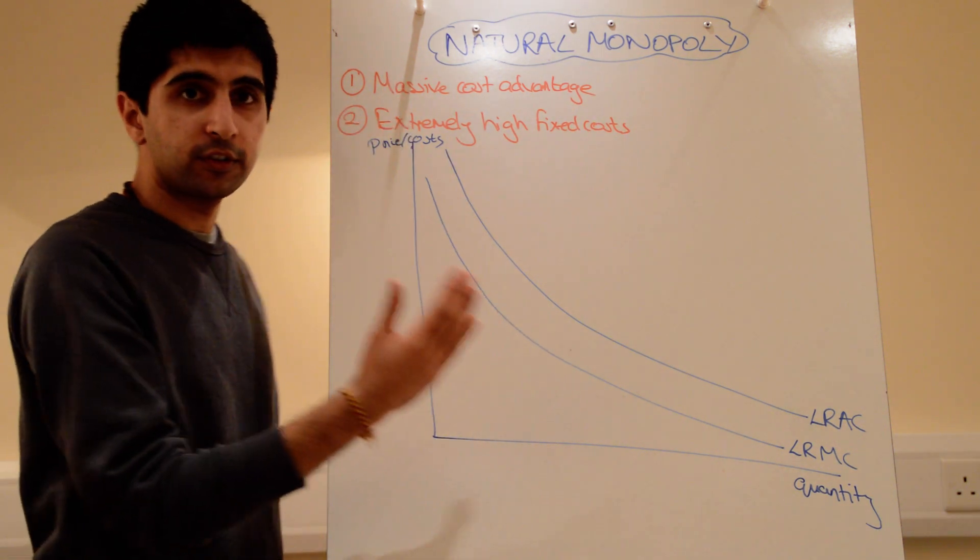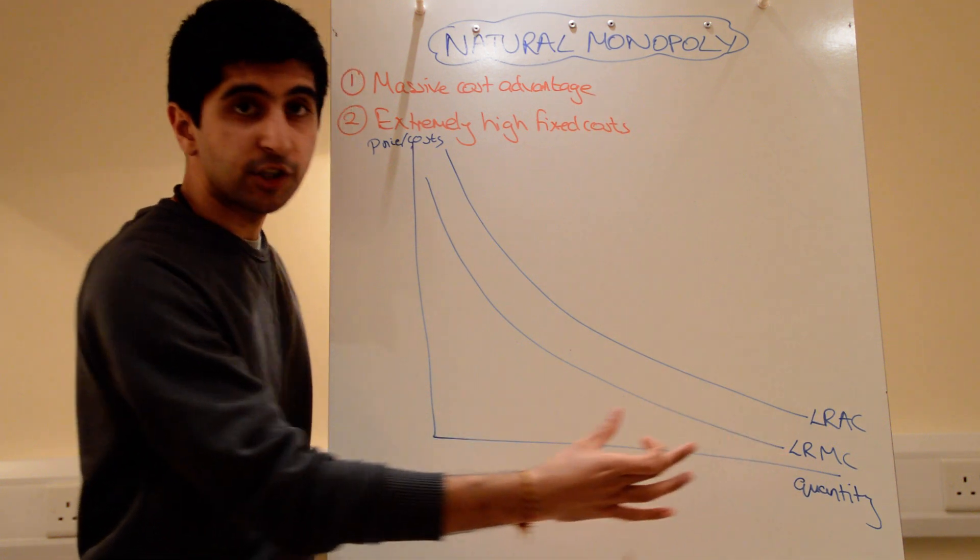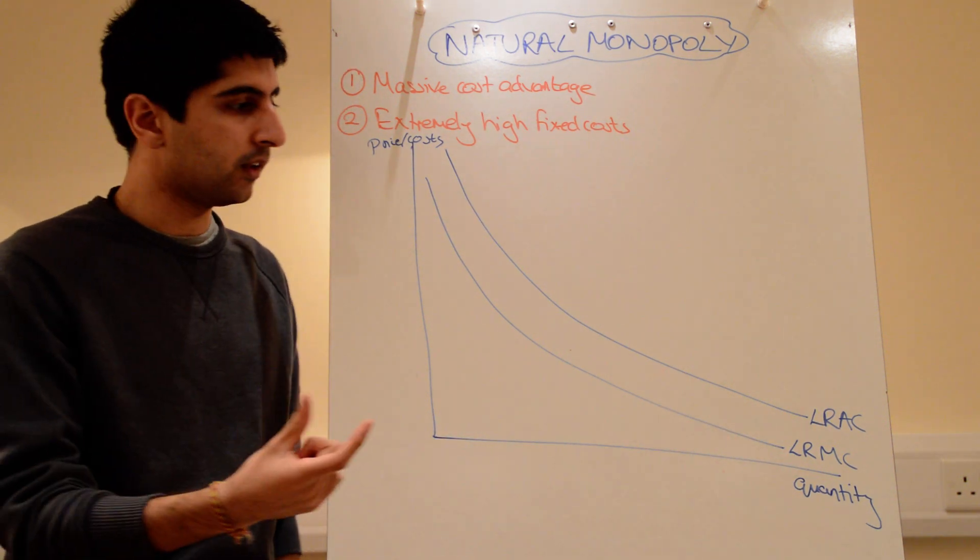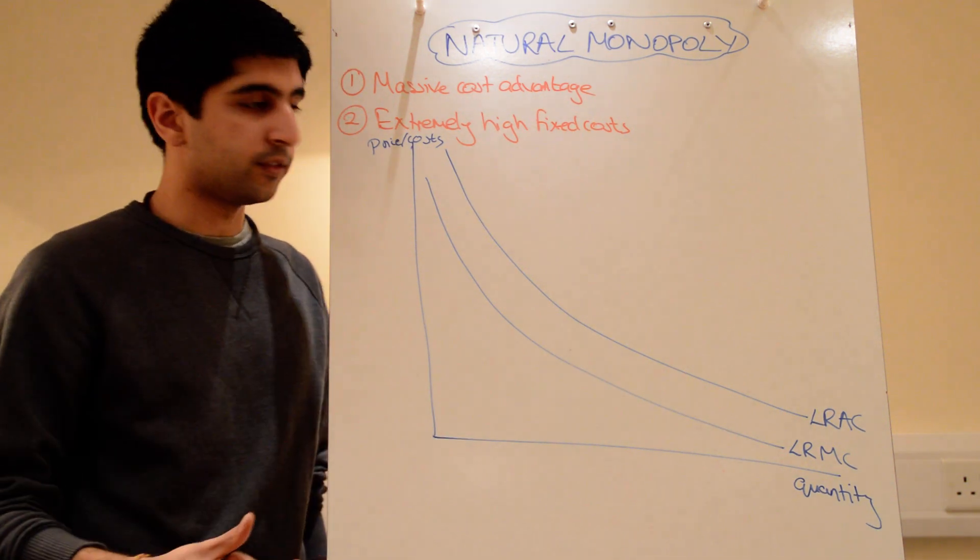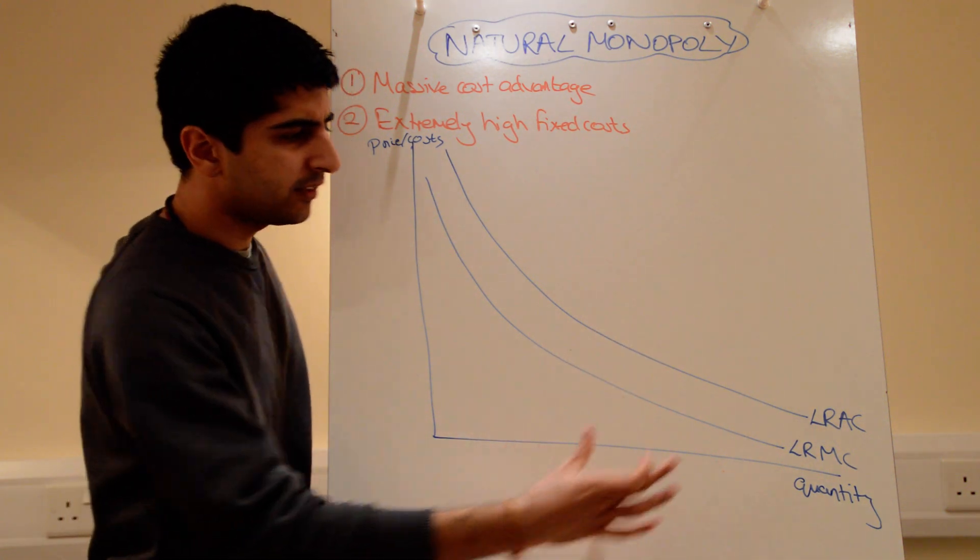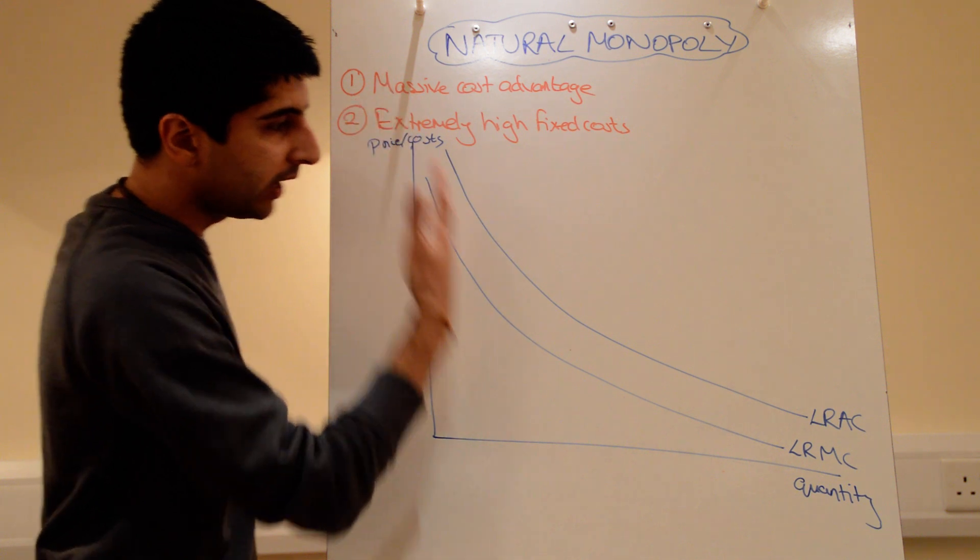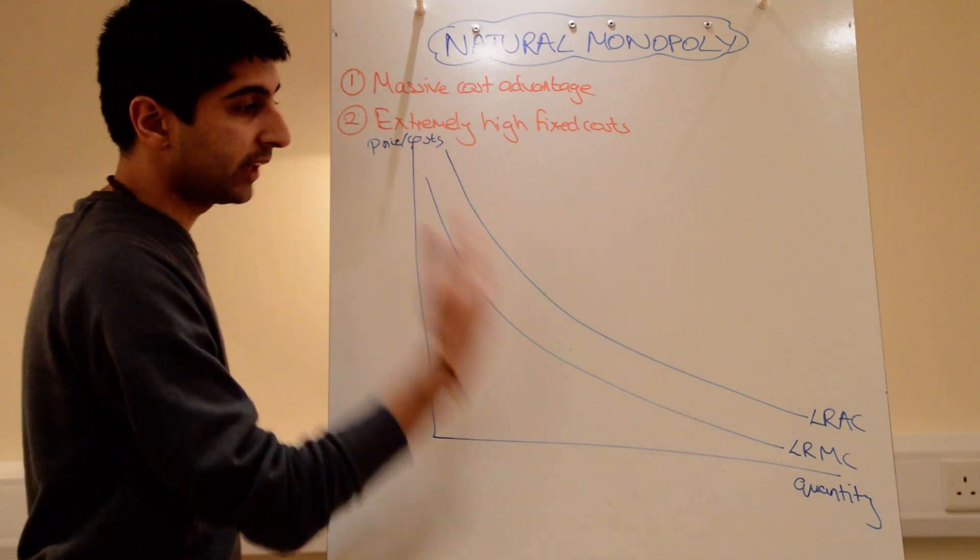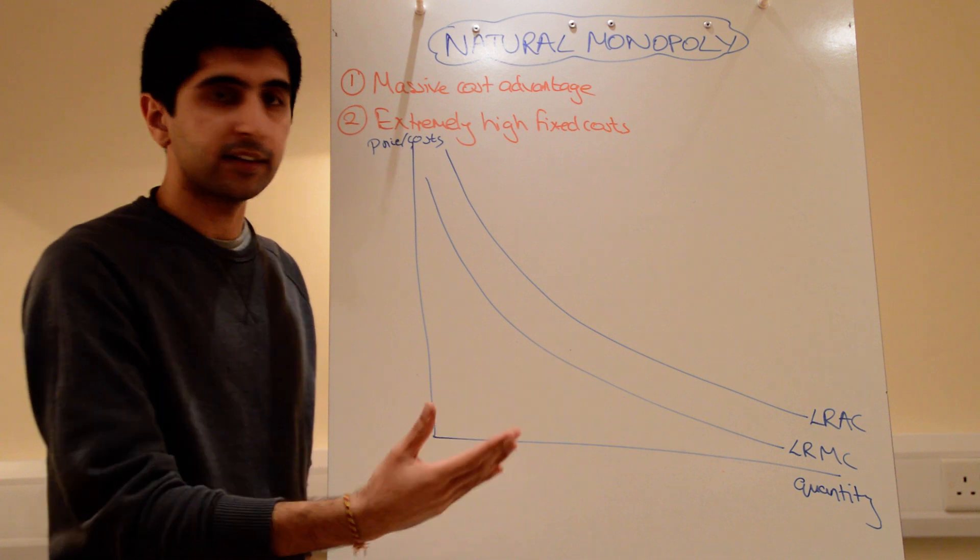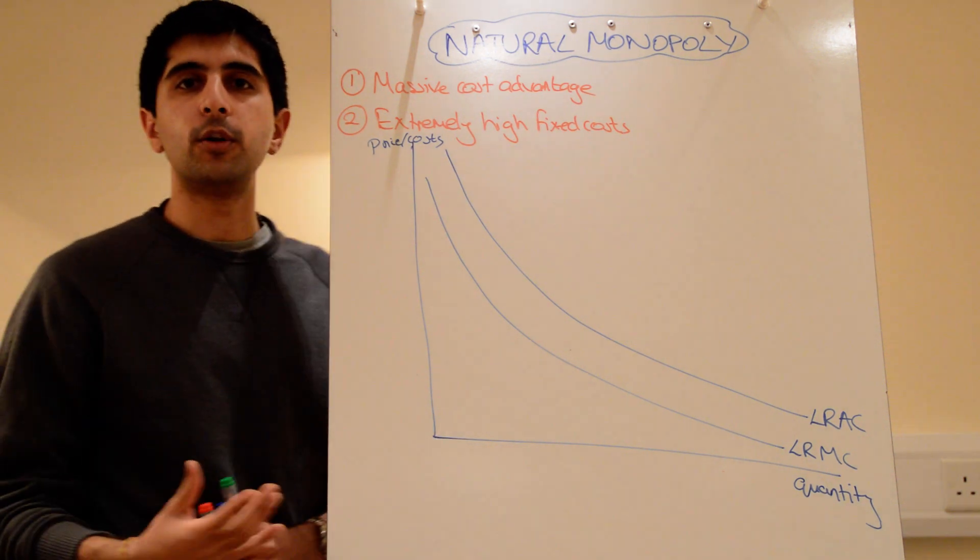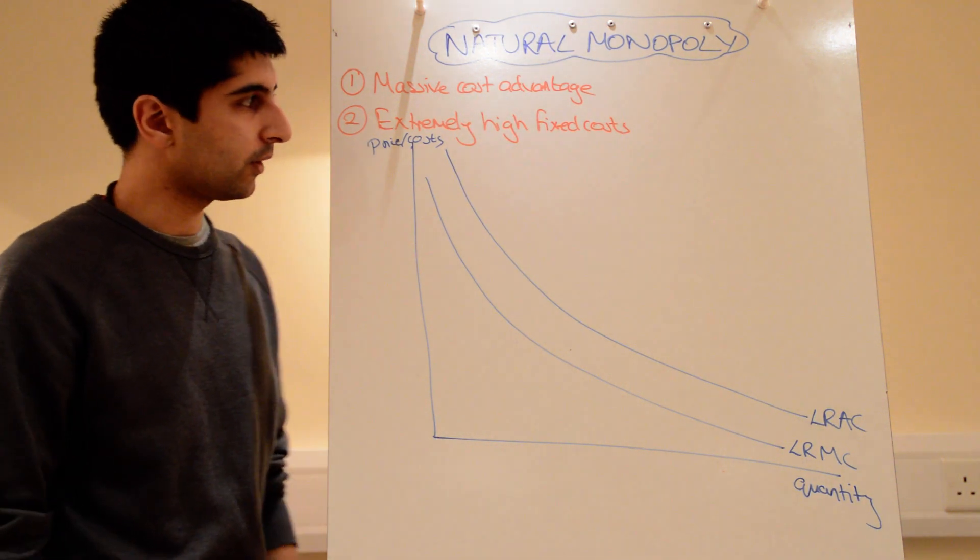Because the fixed costs are so high, to minimise average costs, to get to your minimum efficient scale, and to exploit all economies of scale, takes a long time, takes a huge output level to minimise the average. Which is why the cost curves are drawn like this now, drawn constantly falling to represent the fact that there are huge potential economies of scale gains here.